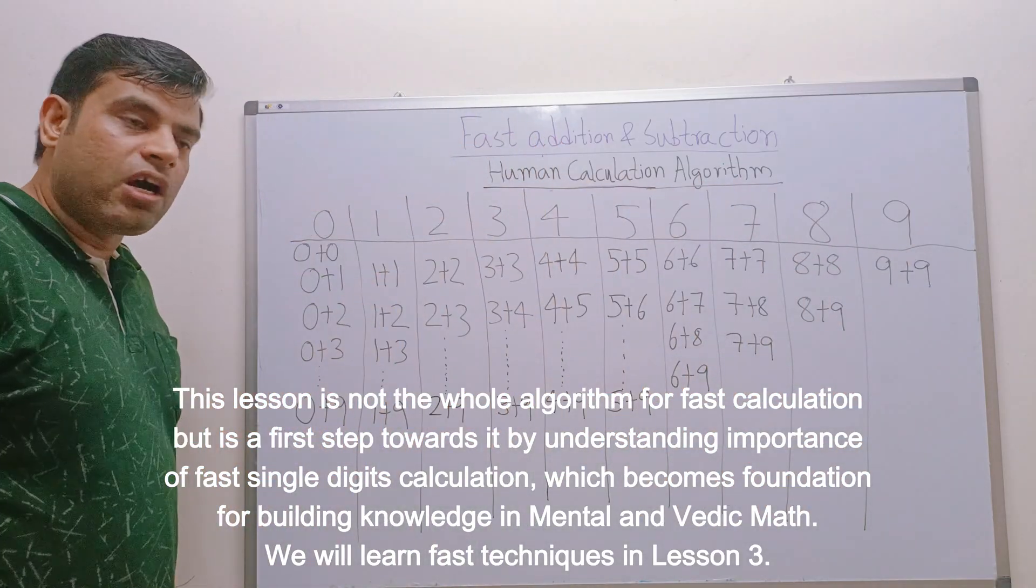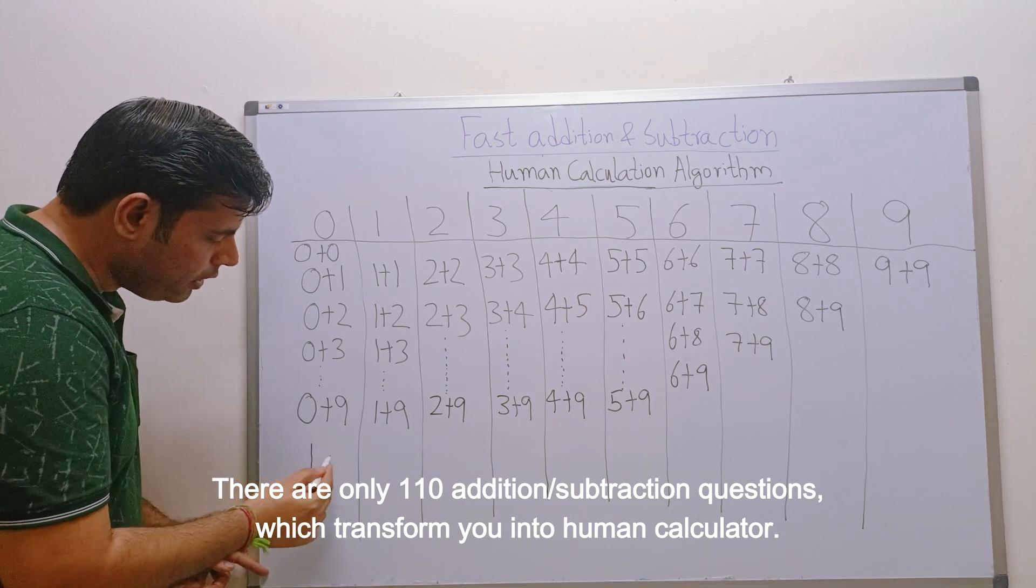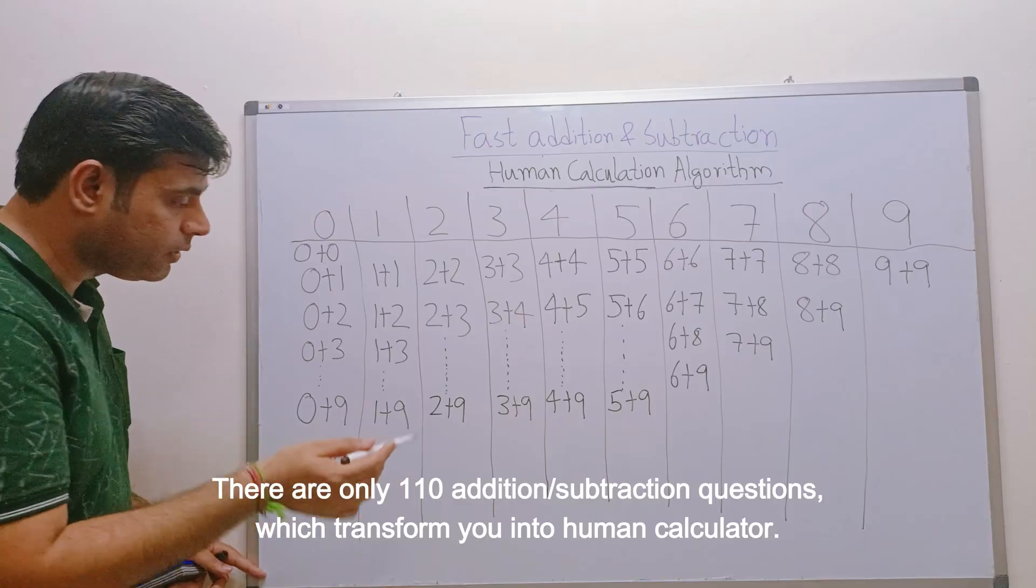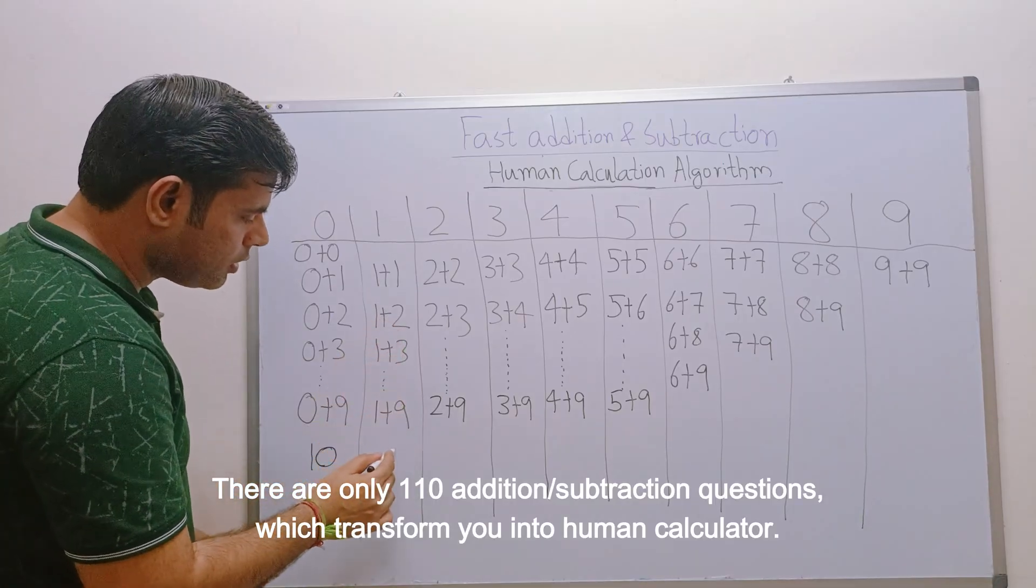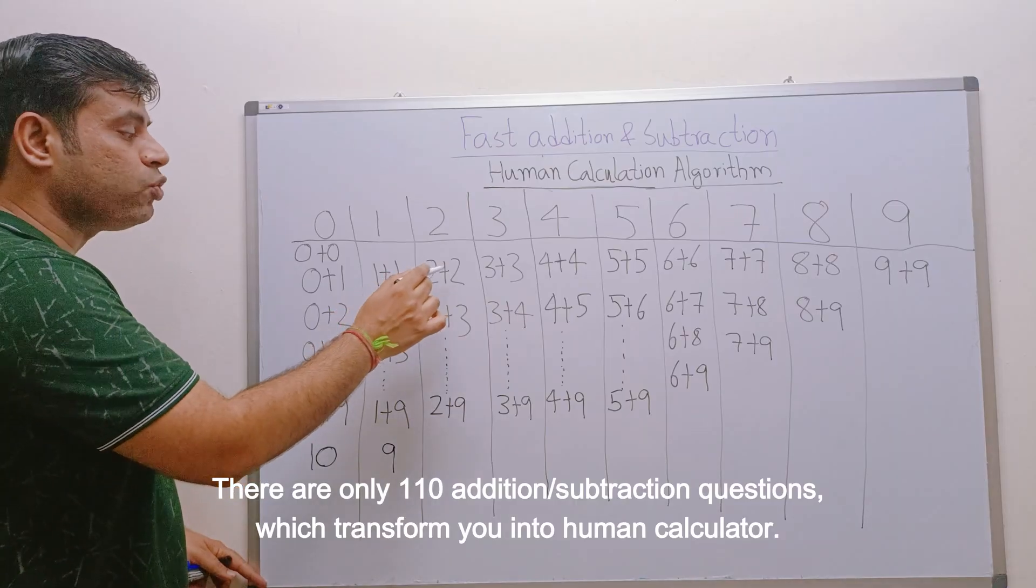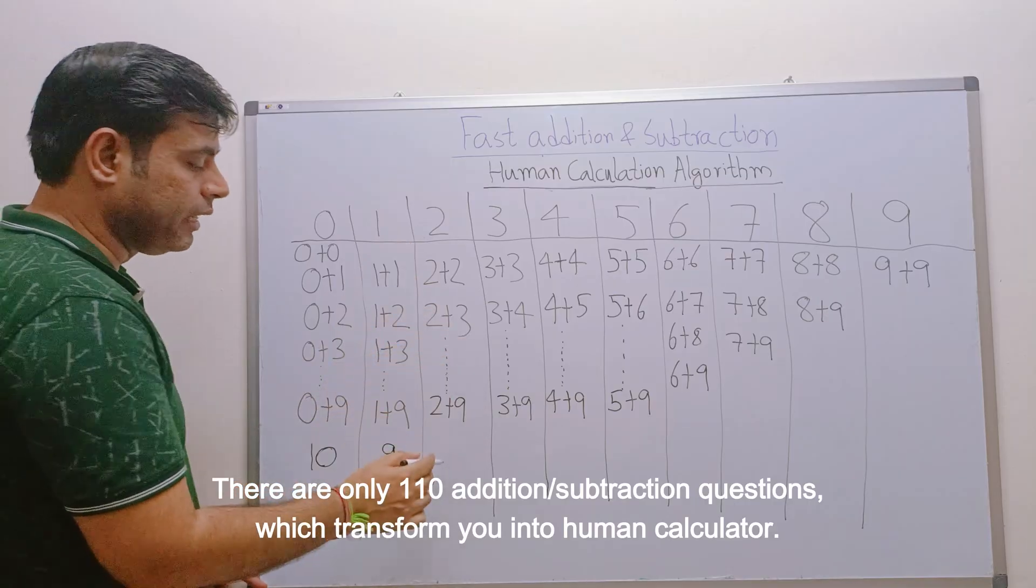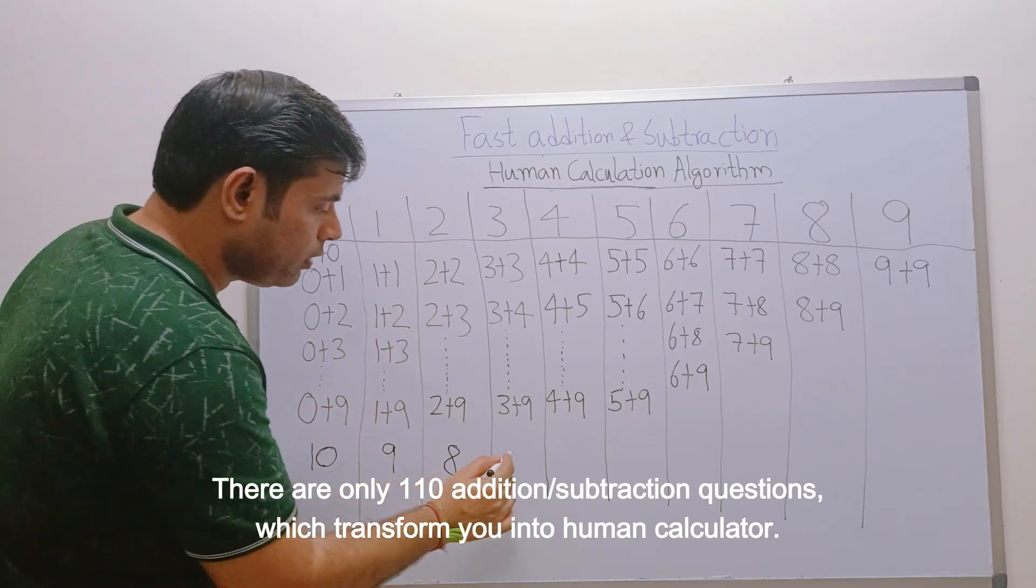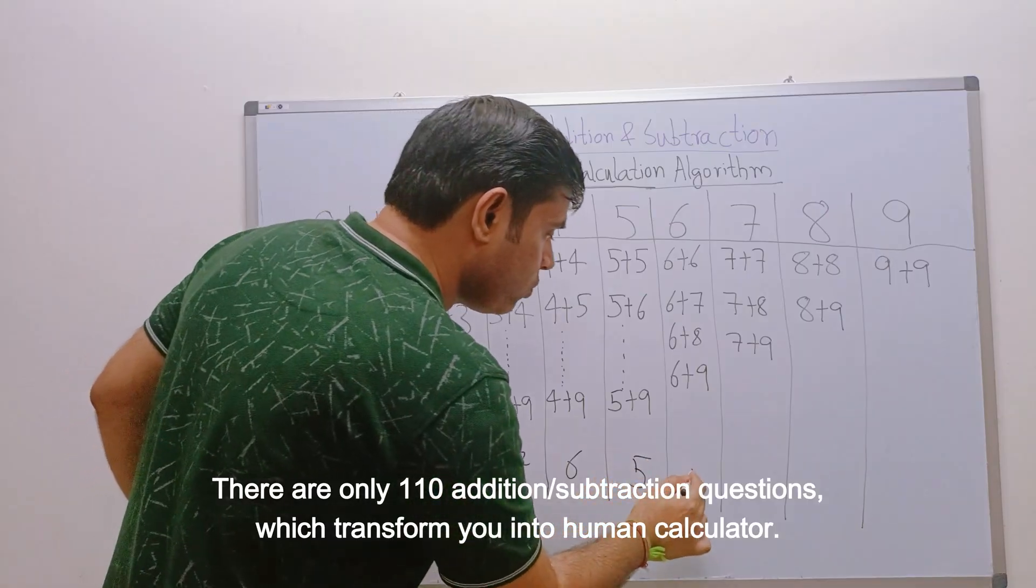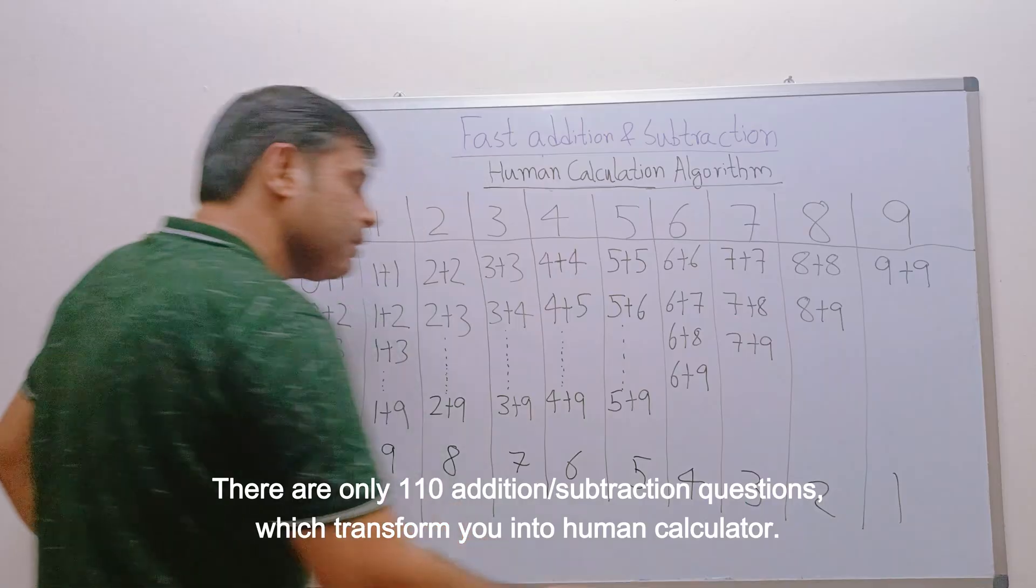If you want to count: 0 plus 0, 0 plus 1, if you see these are 10 questions, although these 10 are so simple you don't even need to write. These are 9 questions, these are 8 questions. Why I am starting 2 plus 2? Because already we have covered 2 plus 1, and 1 plus 2 is same as 2 plus 1. So here there are 8 questions only, then 7 questions, then 6 questions, then 5 questions, then 4 questions, then 3 questions, then 2 questions and then 1 question. There is a pattern here also.